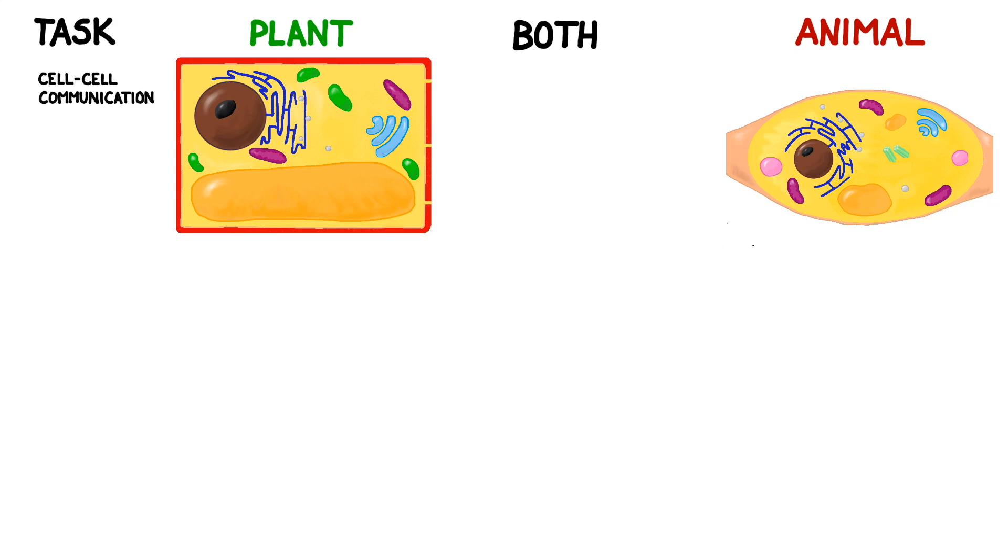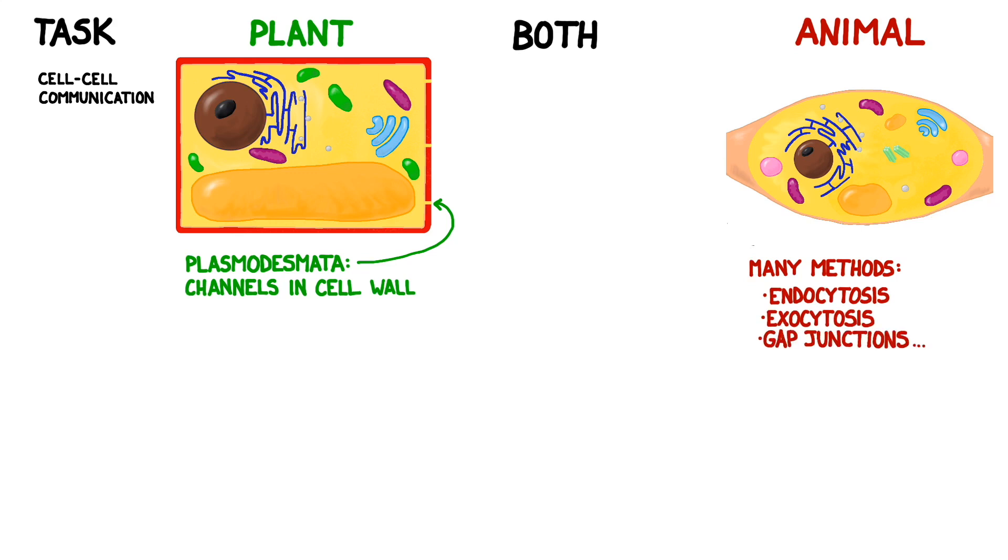Finally, cell-to-cell communication presents some unique challenges for each cell type. Plants often communicate through plasmodesmata, tiny channels in the cell wall, but because animal tissues are so diverse, they need multiple methods of communication. A few examples include endocytosis, exocytosis, and gap junctions, although the details are outside the scope of this video.